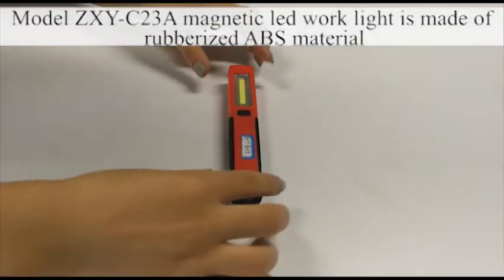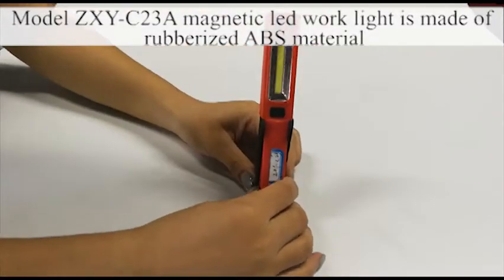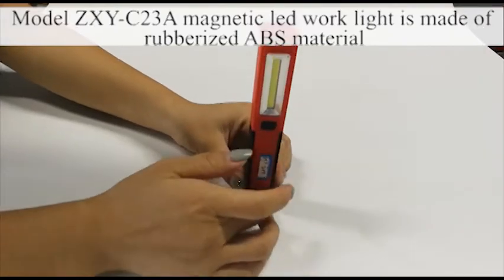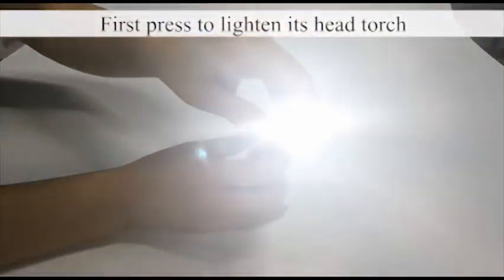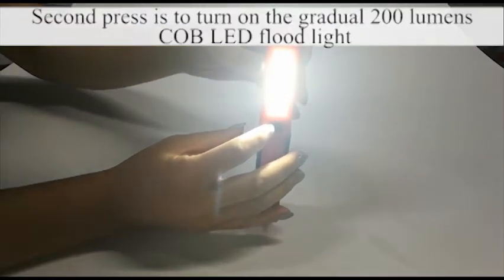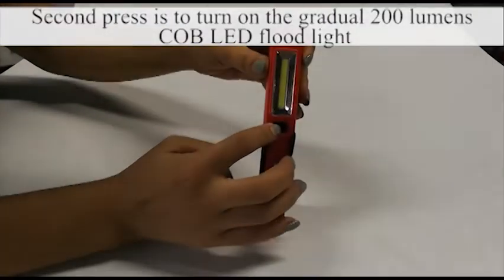Model ZXY C23A Magnetic LED work light is made of rubberized ABS material. First press to lighten its head torch. Second press is to turn on the gradual 200 lumen COB LED floodlight.